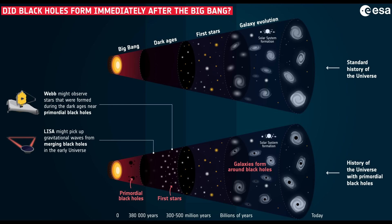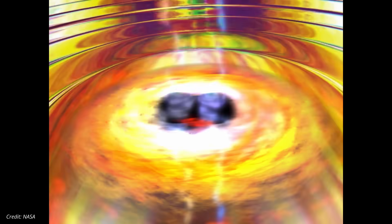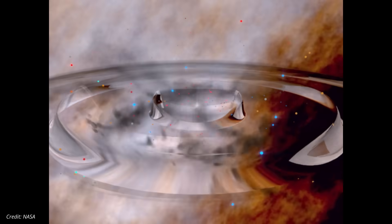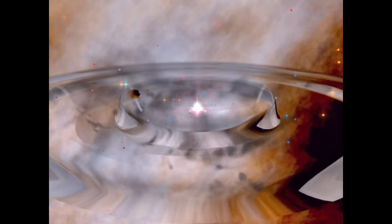The Big Bang model doesn't naturally make enough primordial black holes to begin with. The abundance required here would overwhelm the universe's matter budget. And if so many existed, what became of them? They can't all merge quietly into galactic centers. Collisions of primordial black holes would flood the cosmos with gravitational waves and radiation. We don't see that.